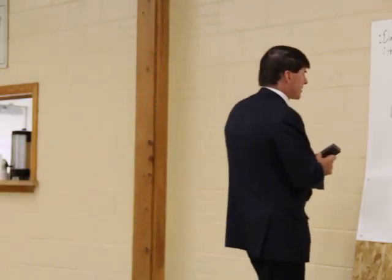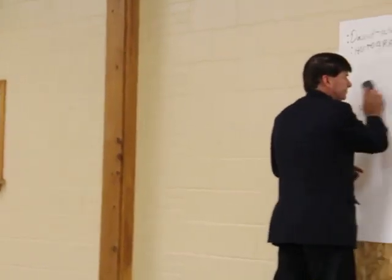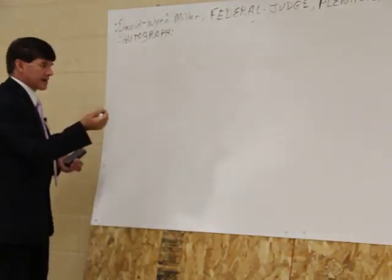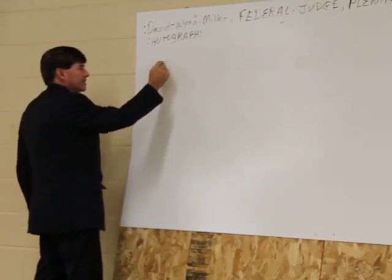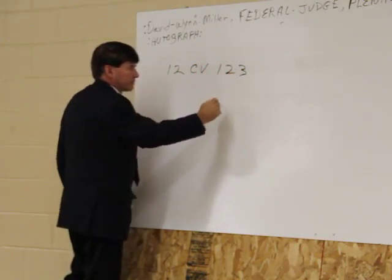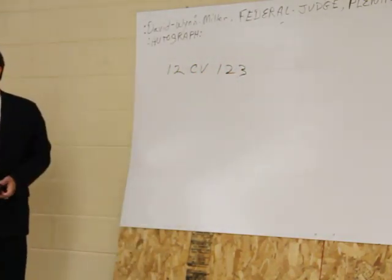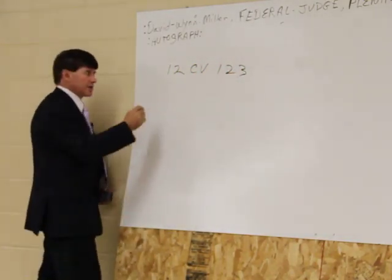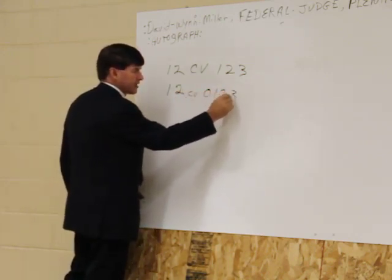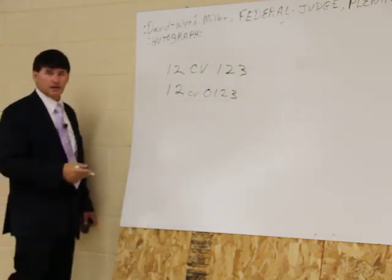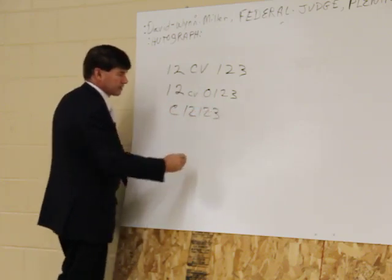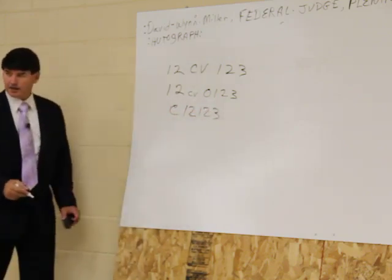The federal judge is going to come back with your case number. It's 12CV123 — that's what the clerk puts on your paperwork. The judge is going to come back and answer you with 12CV0123, which is a different case number. Or they're going to come back and say C12123 — that's another case number.